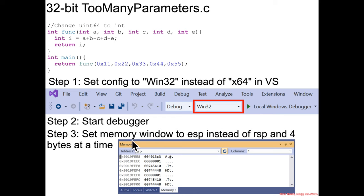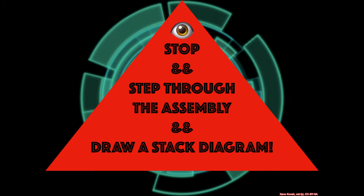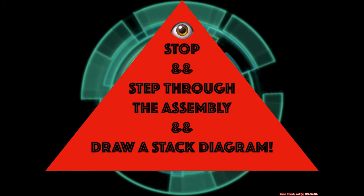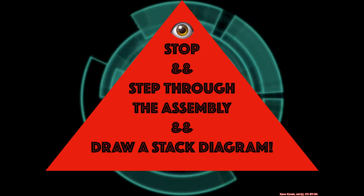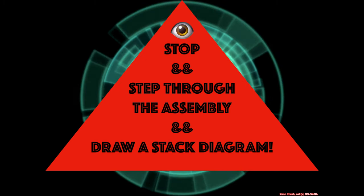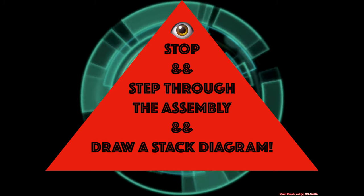Start the debugger. Make sure that you set your memory window for ESP and auto-refresh instead of RSP, otherwise it'll give you an error. Set it to 4-byte size because in 32-bit code, pointers are 4 bytes. Then just go ahead and step through the assembly and draw a stack diagram as usual — probably using 4-byte sizes instead of 8-byte sizes since we're dealing with 32-bit code.